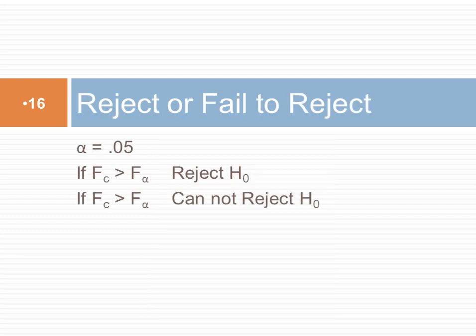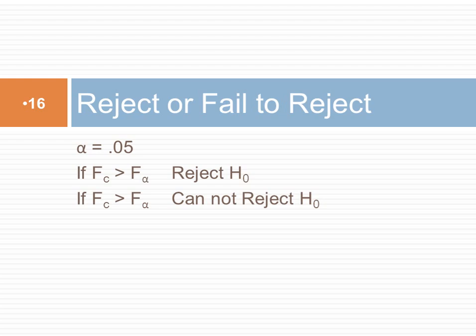After calculating the F statistic, we reject or fail to reject. Typically, we will reject if the calculated F value is greater than the critical F value at the alpha level of 0.05. If we get an F value bigger than the F value associated with a 5% chance of error, then the probability is smaller than 5% and we reject the null hypothesis. Otherwise, we cannot reject the null hypothesis.